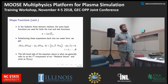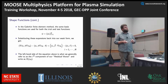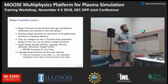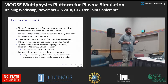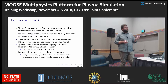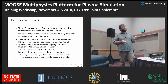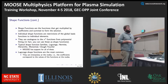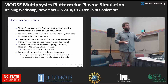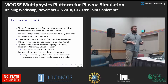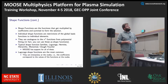Substituting all this back into the weak form we generated earlier gives us our Moose code. Typical basis function families available in Moose are Lagrange, Hermite, Hierarchic, Monomial, and Clough-Tocher. Moose has support for all of these. Most of the time when getting started, Lagrange functions directly correspond to the value of the function at the nodes, which is why they're used as the default — they're the easiest to understand.